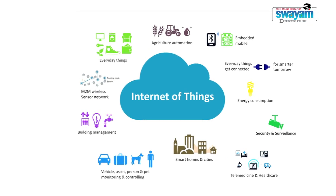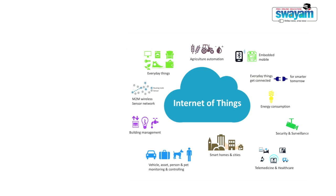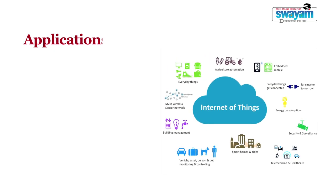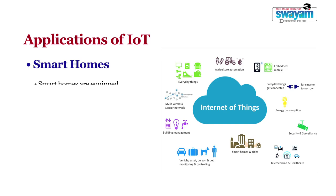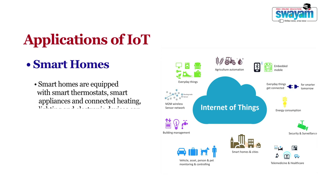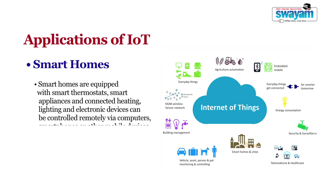There are numerous real-world applications of the Internet of Things. First, smart homes: smart homes are equipped with smart thermostats, smart appliances, and connected heating, lighting, and electronic devices that can be controlled remotely via computers, smartphones, or other mobile devices.